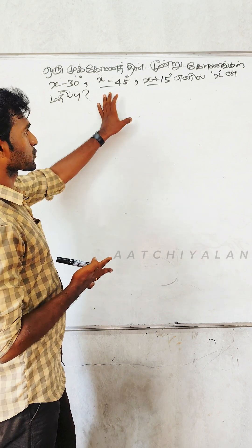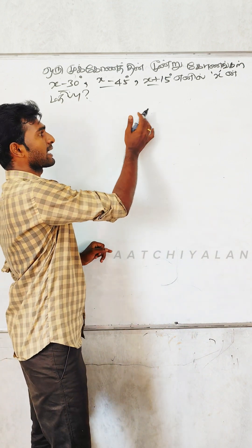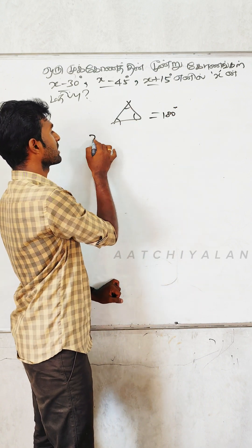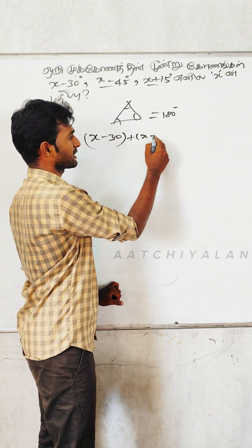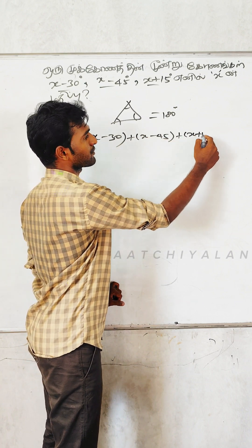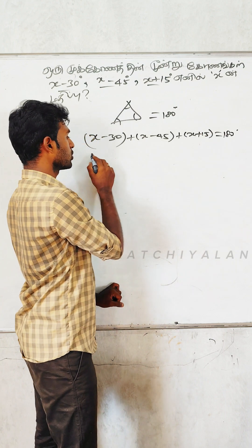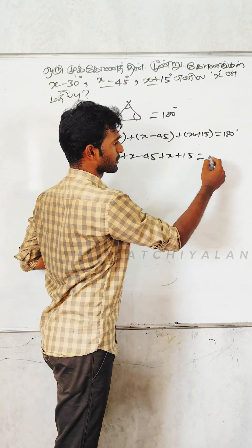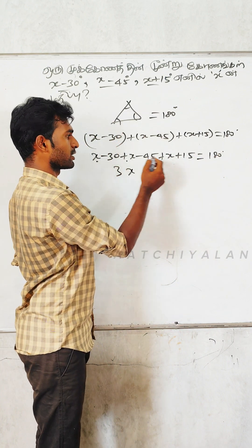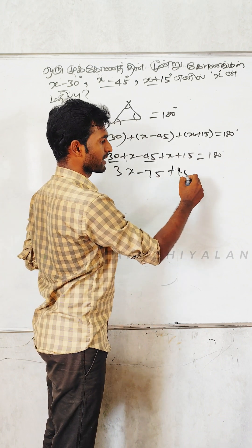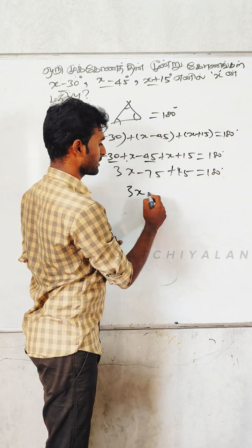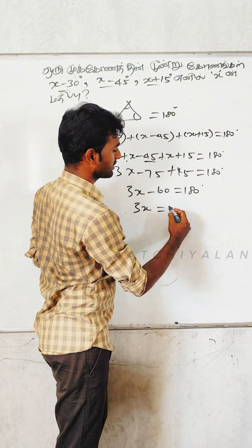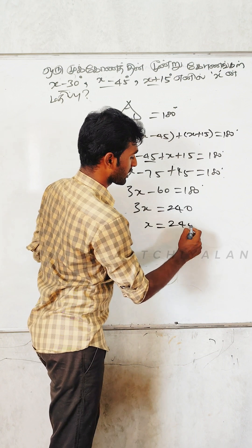If you give a value to a 3-angle, you can add the angles. That is a triangle with 3 angles. If you add all 3 angles, you get 180 degrees. x minus 30 plus x minus 45 plus x plus 15 equals 180. You have 3x. Minus 30 minus 45 plus 15 gives minus 60. So, 3x minus 60 is equal to 180. Therefore, 3x is equal to 180 plus 60, which is 240. So, x equals 240 by 3, which is 80.